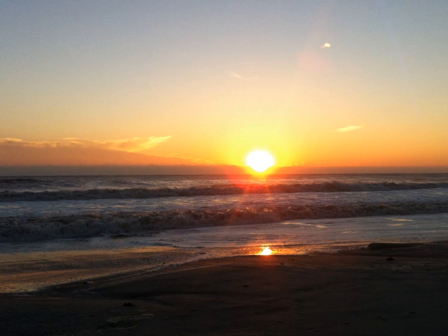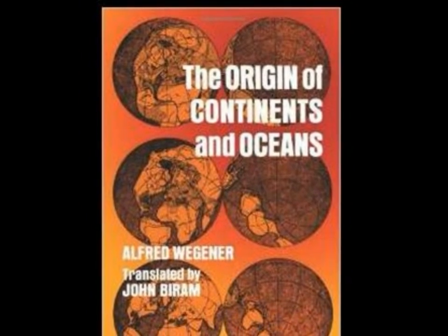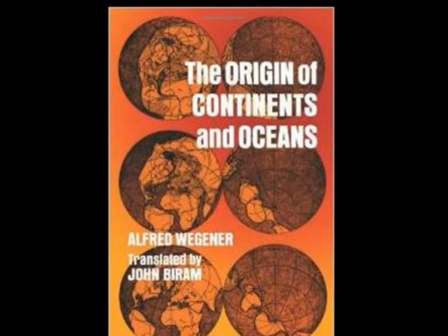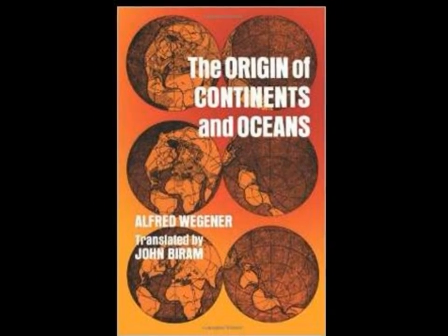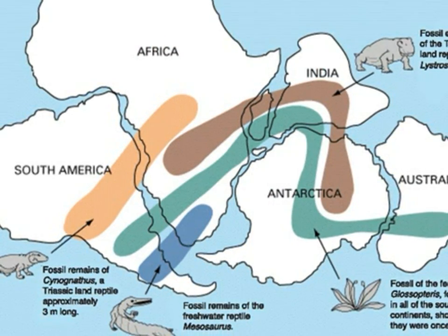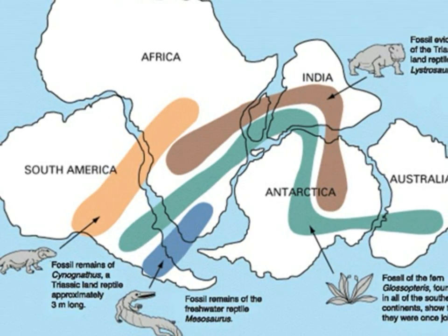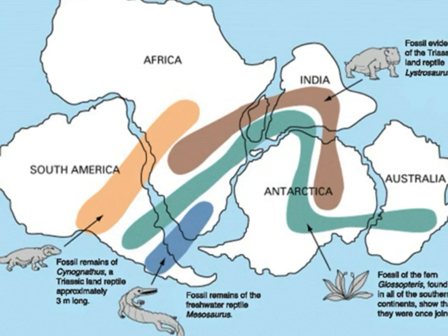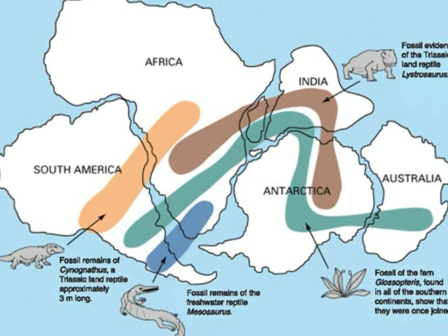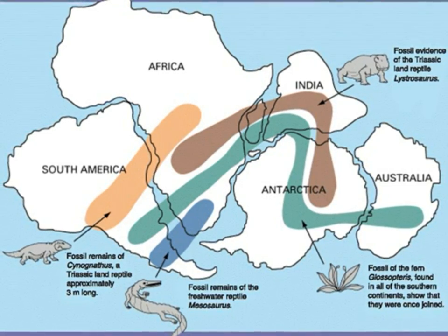In 1912, Alfred Wegener publishes The Origins of Continents and Oceans, with compelling evidence showing that the continents are slowly drifting around the earth. The evidence: similar shorelines — the shape and composition between the continents is the same. Even the finest observable details, like folds and undulations in the rock, are exactly the same between continents separated by thousands of miles of ocean.